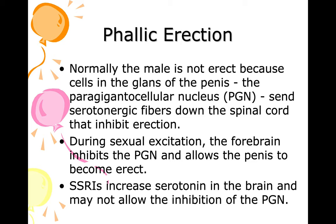Normally, the male is not erect because cells in the glands of the penis — the paragigantocellular nucleus — send serotonergic fibers down the spinal cord that inhibit erection. During sexual excitation, the forebrain inhibits the PGN, allowing the penis to become erect. The substance that does this is nitrous oxide — the same as laughing gas. SSRIs increase serotonin in the brain and may not allow the inhibition of the PGN, meaning the individual will not be able to have an erection.